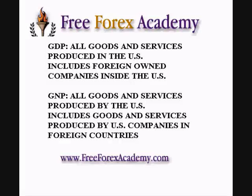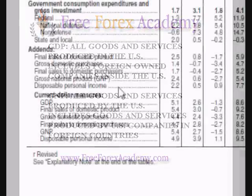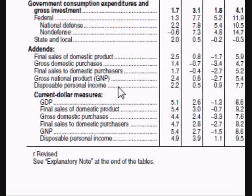The gross national product does not include goods and services produced by foreign-owned companies located in the US. For example, products produced from a Honda Motors car plant located inside the US are added to the total for GDP but not added to the total for GNP. Whereas goods produced from a Ford plant located in Europe are added to the gross national product but not added to the gross domestic product.